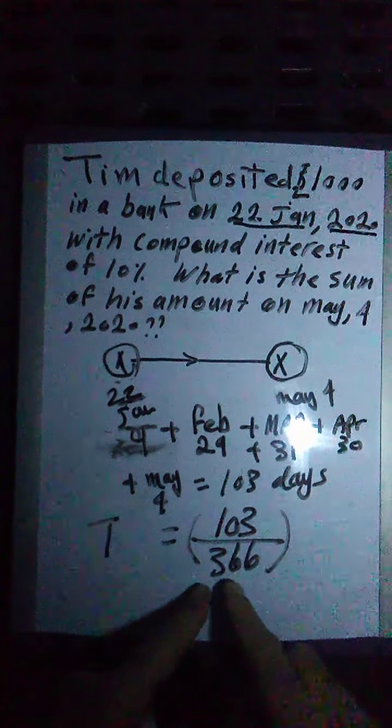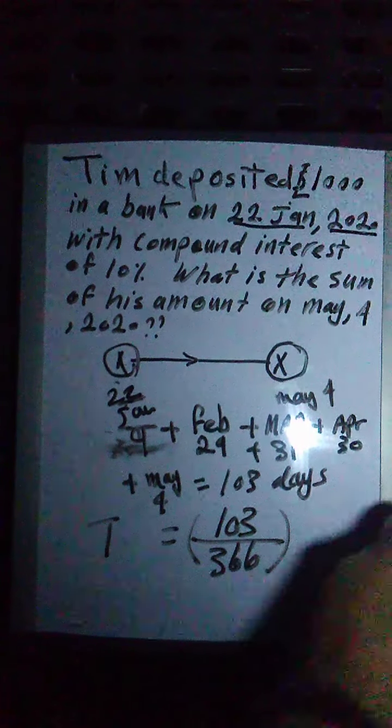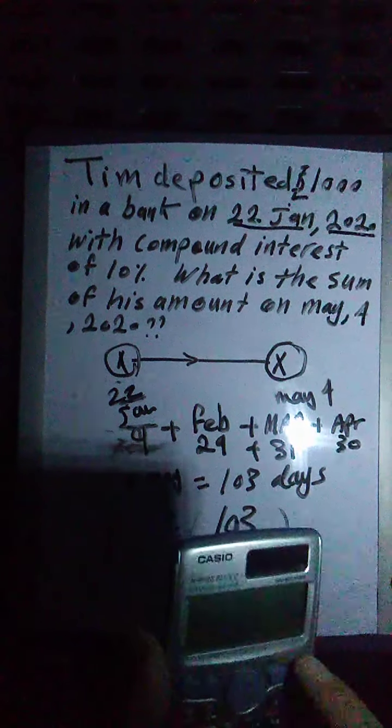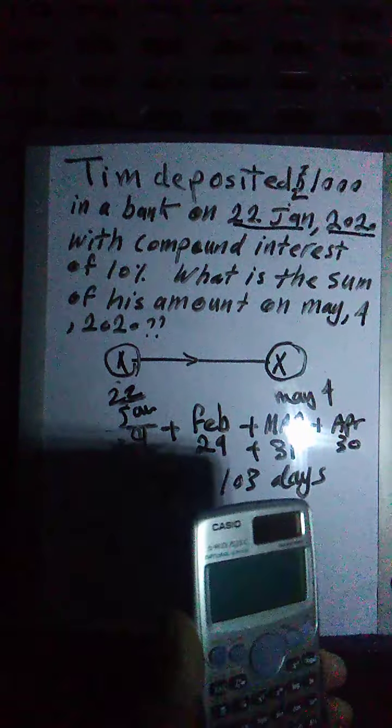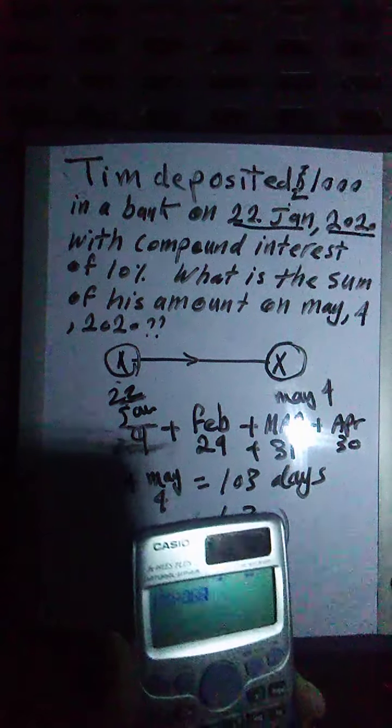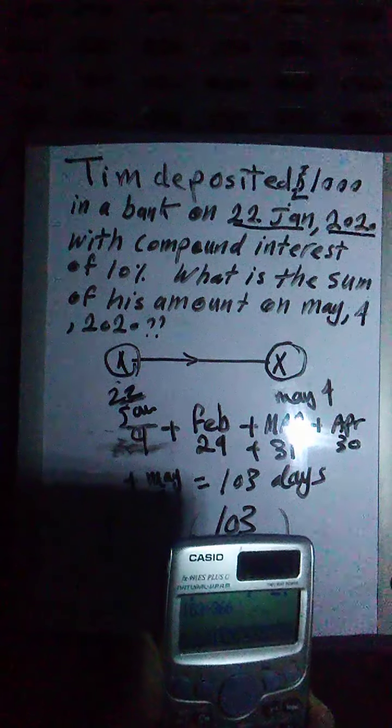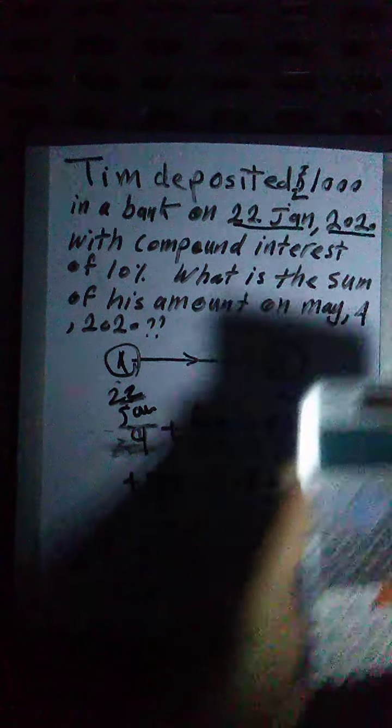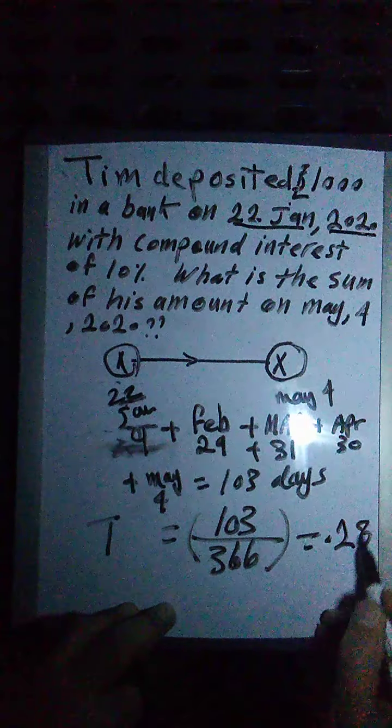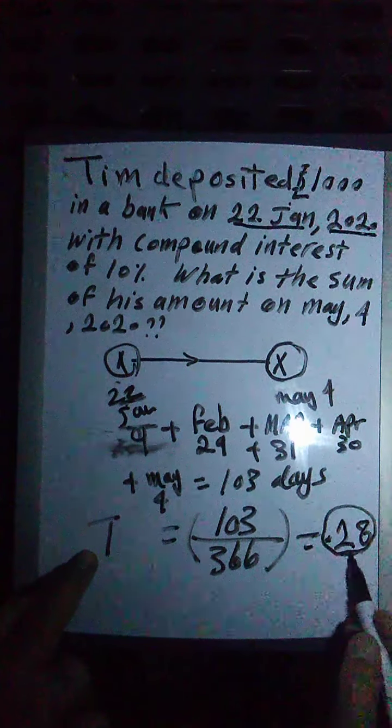Then, 103 days divided by 366. This will give me, will check out by the calculator, how much this will give, and this will be our power T. So here we go, 103 divided by 366. That will equal, 0.28, 0.28 is enough, equals 0.28. So my power, the T, will be 0.28. This will be the T, 0.28.